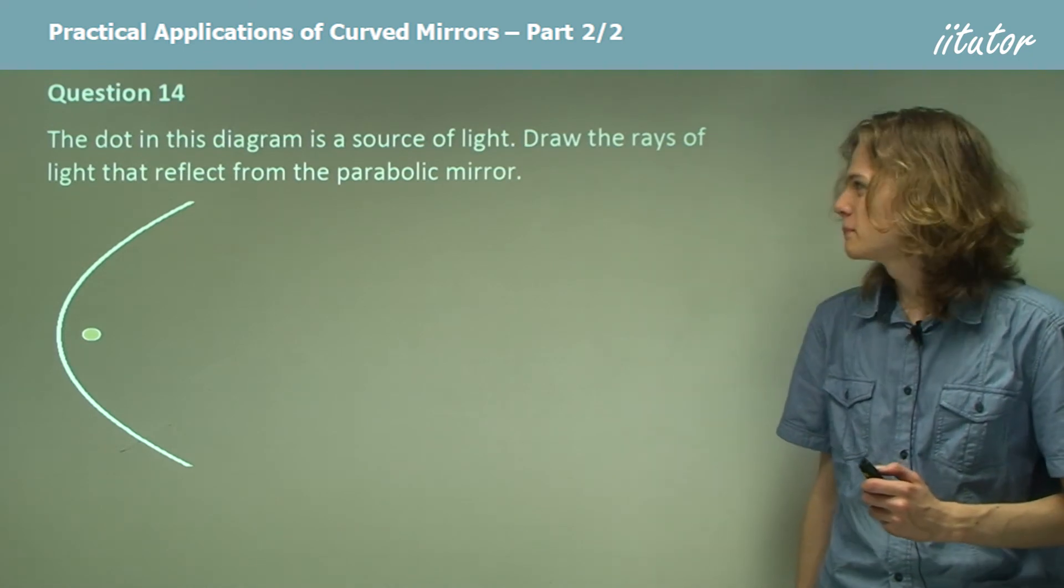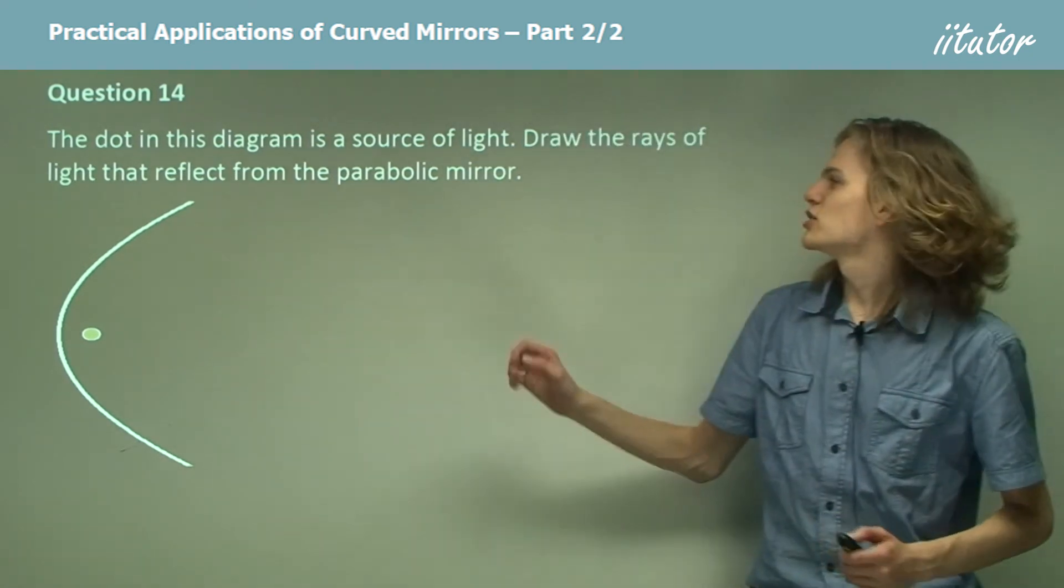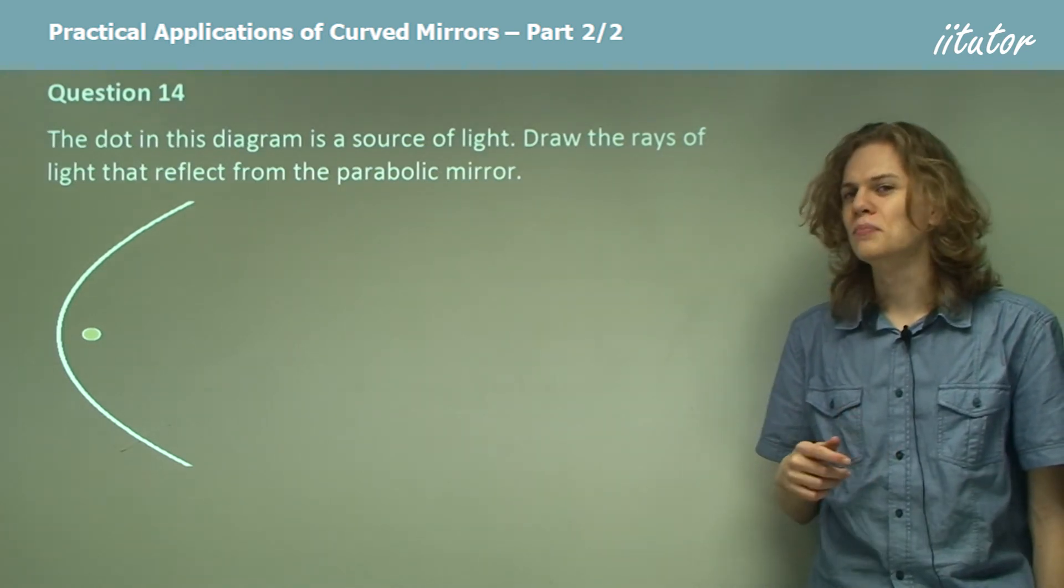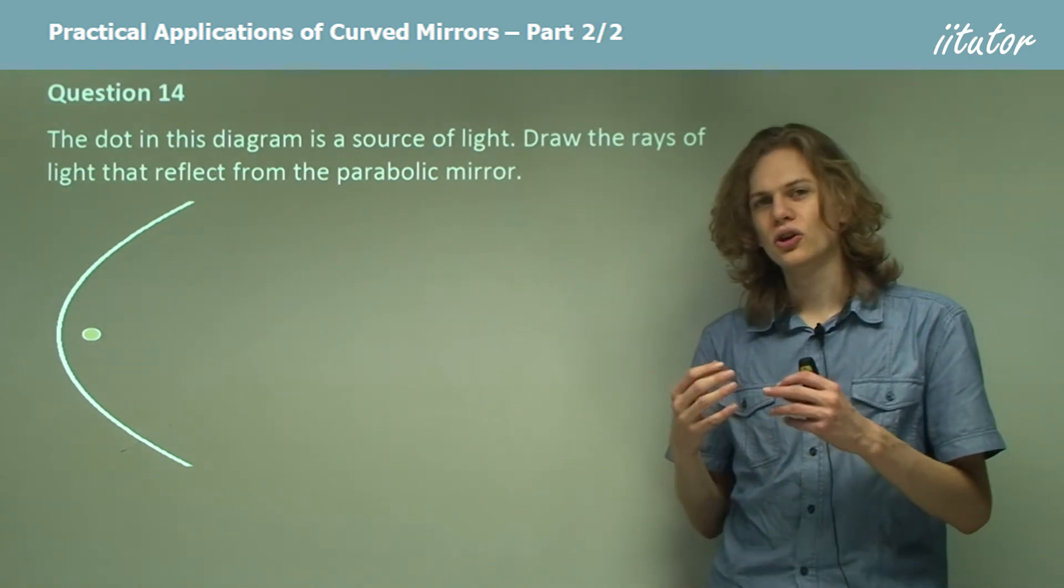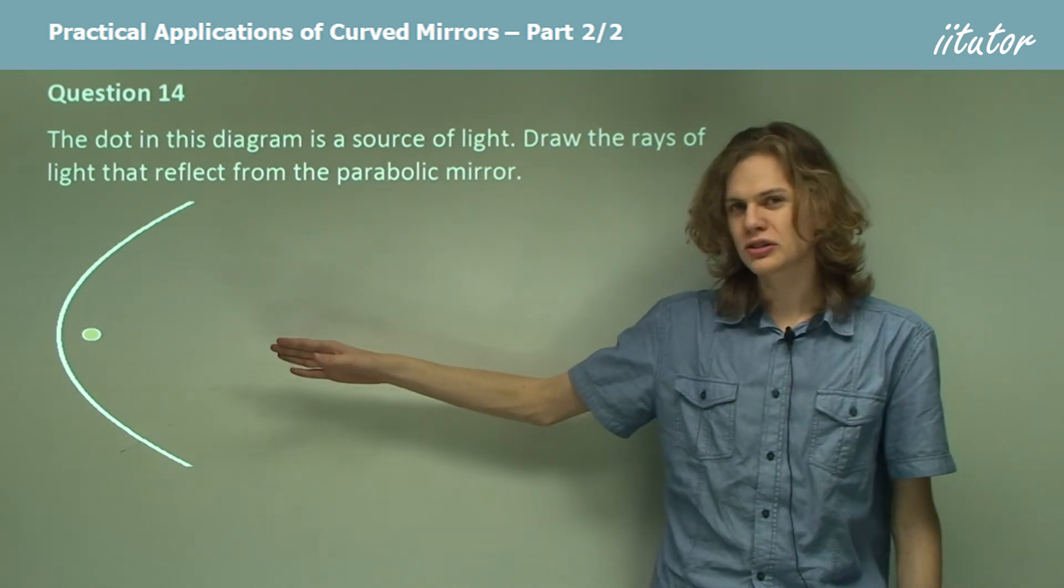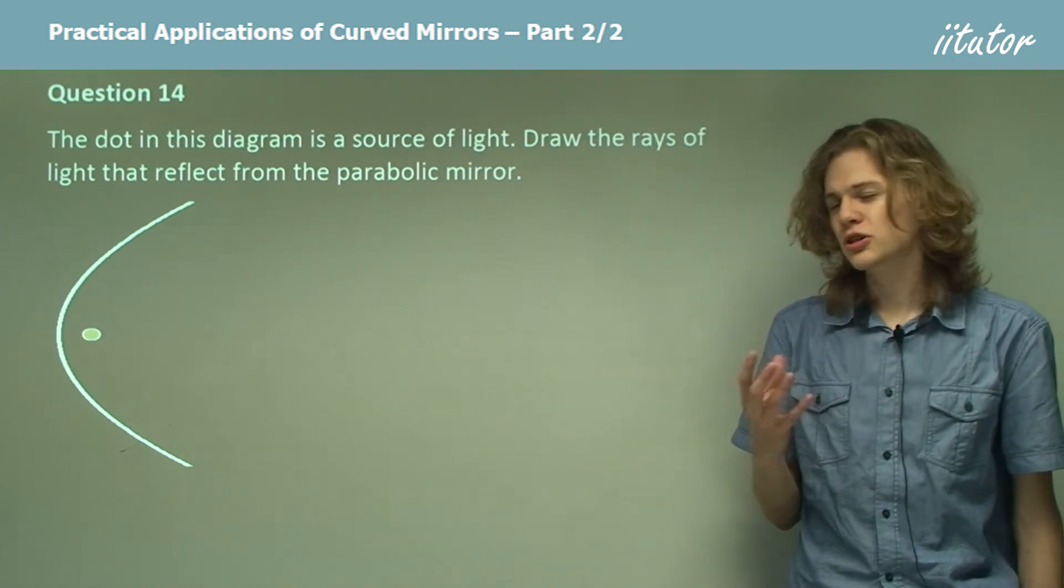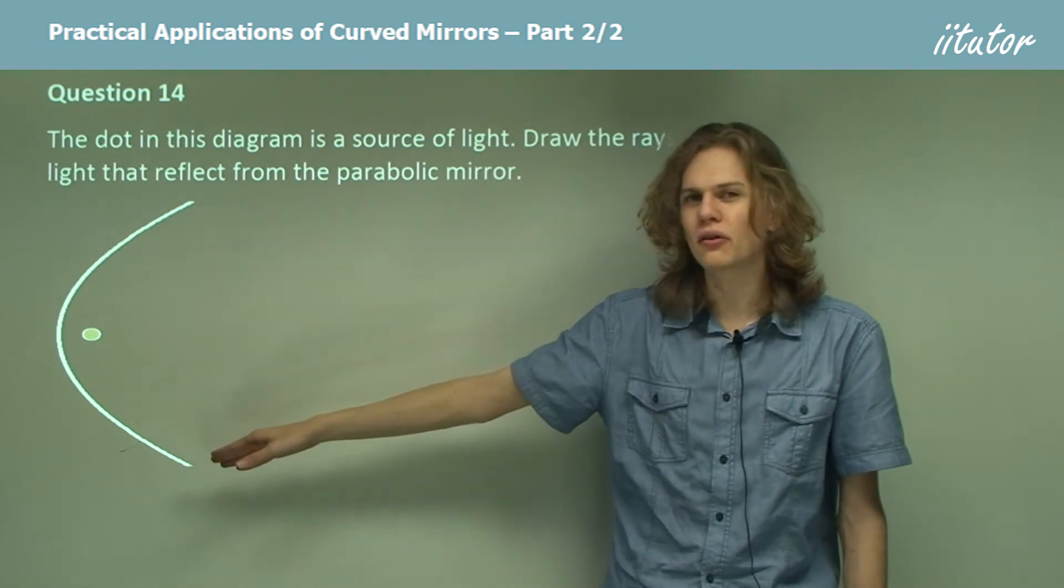Question 14. The dot in this diagram over here is a source of light. Draw the rays of light that reflect from the parabolic mirror. So in order to answer this sort of question, we're going to need to show that we understand what will happen for light coming out in all directions. We can't just draw a single light ray and call it a day. It's a much better idea to draw a number of light rays all coming out and hitting different points of the mirror.